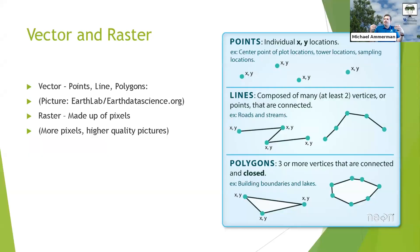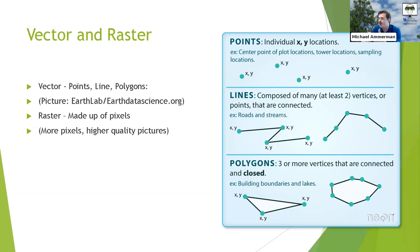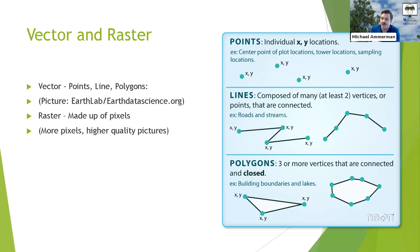The next part covers vectors and rasters — your two main data types within GIS. A vector is made up of points, lines, and polygons. Points are individual XY locations. Lines are composed of at least two vertices or points that are connected. In GIS we call them vertices, nodes, or points, and they create line segments. Polygons have three or more vertices that are connected and closed. You build layers from points into lines and into polygons.